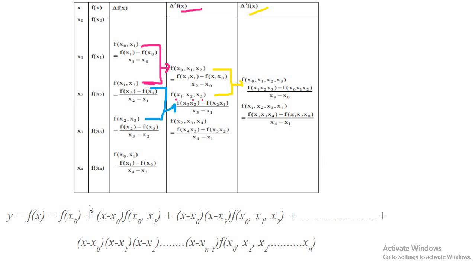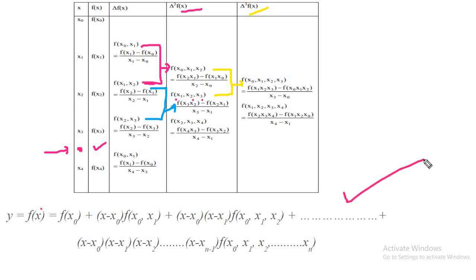When you have the polynomial, if you want to find the value at some point x, you put the numerical value of x into the polynomial and you will get the function value. Now we will see a simple numerical problem using this method.